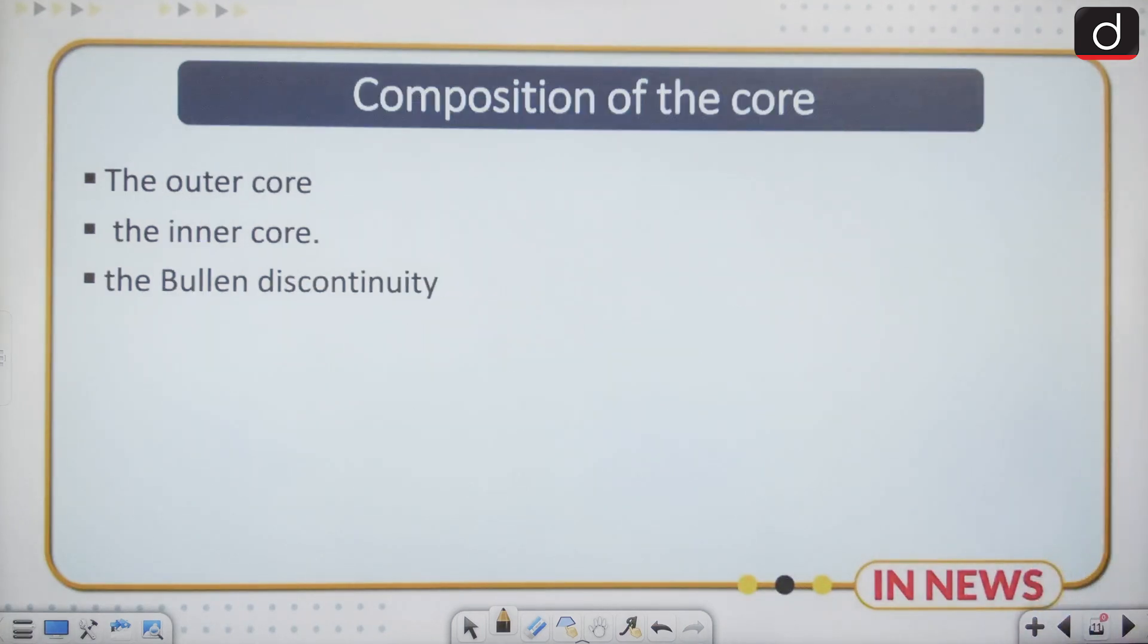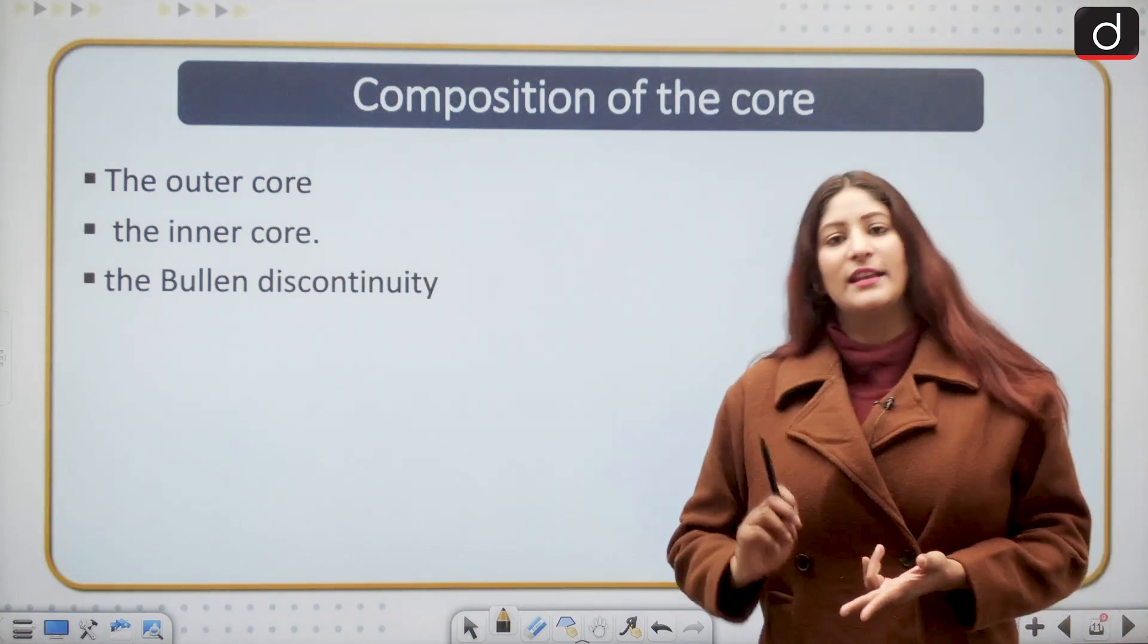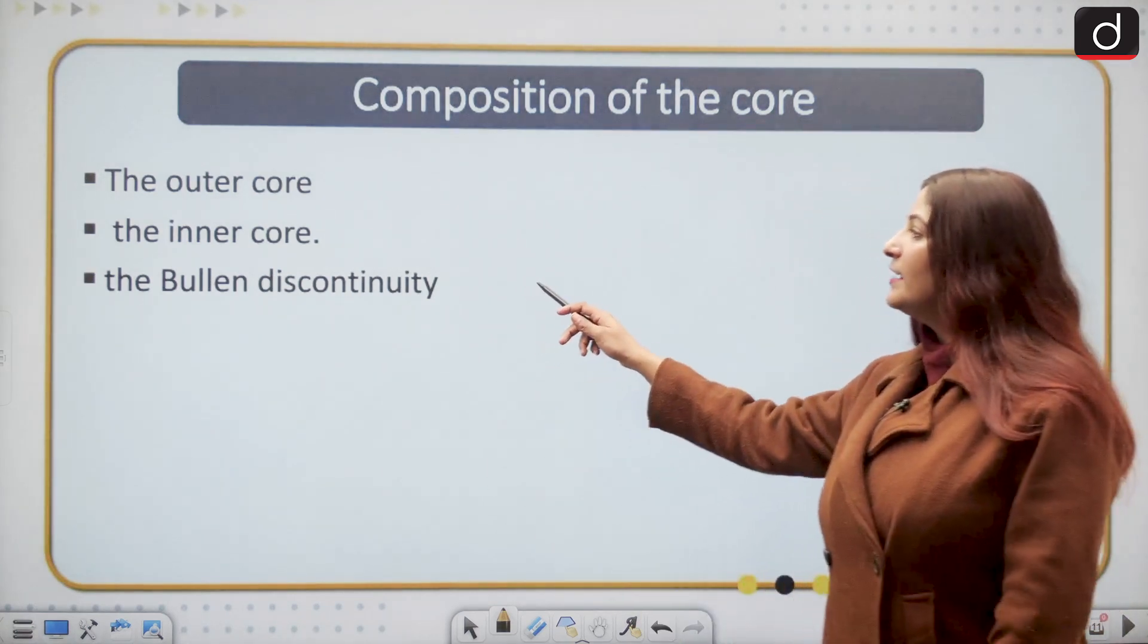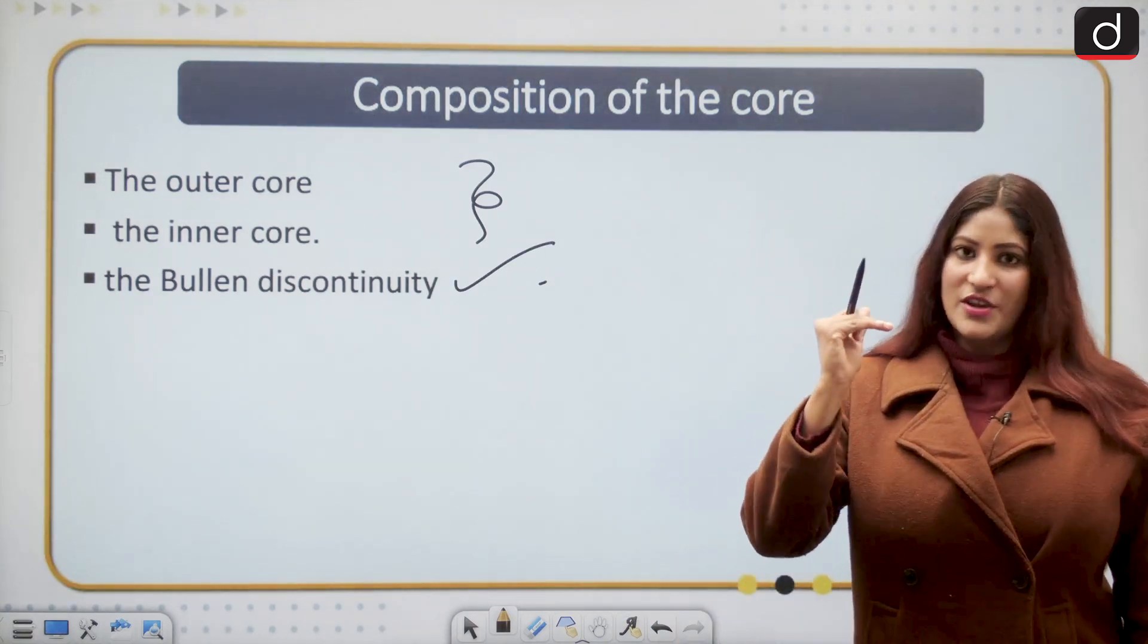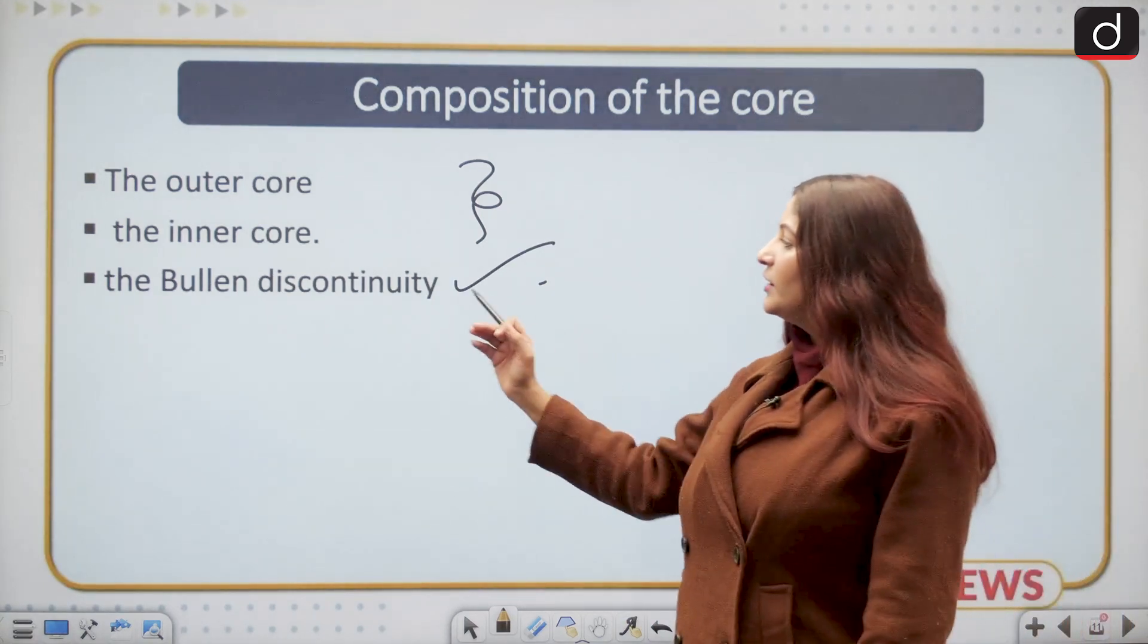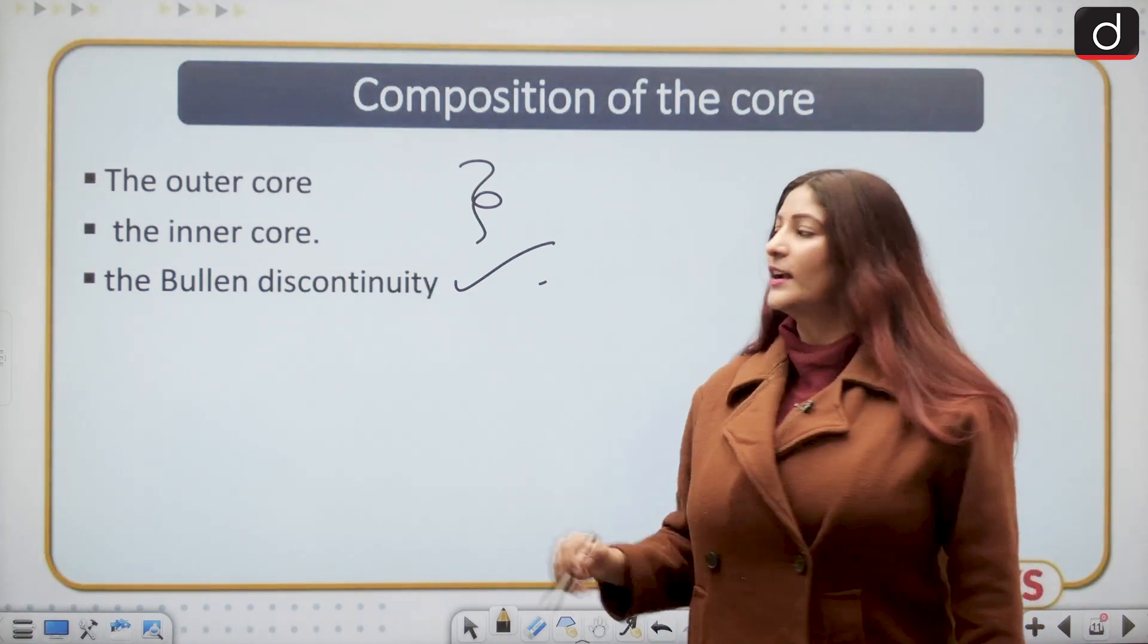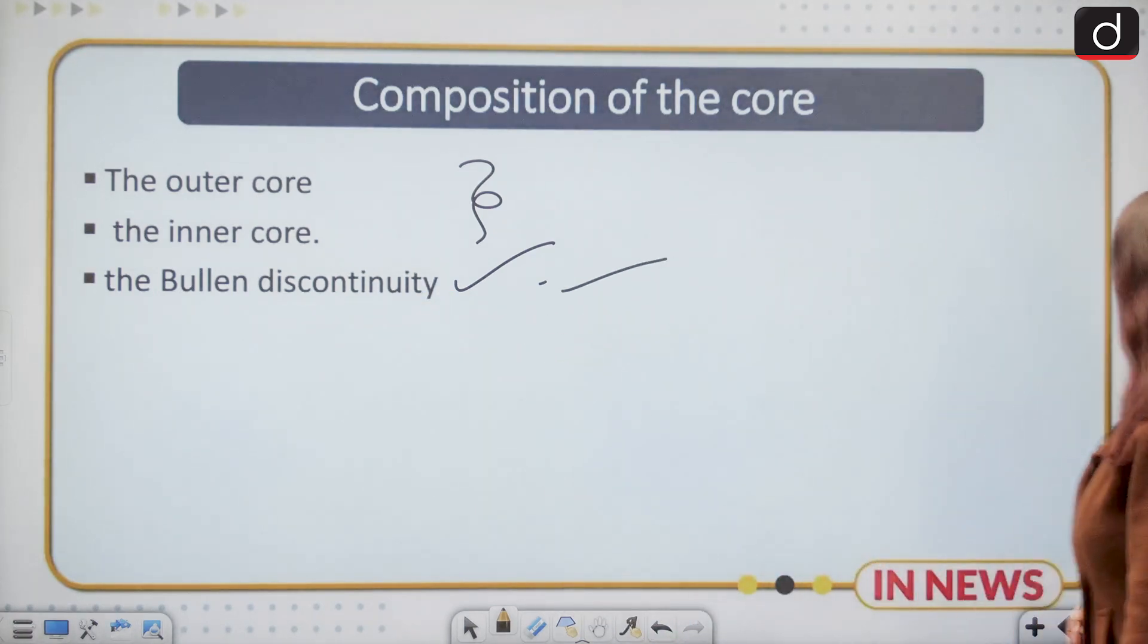This could be asked in your prelims examination. If we talk about the core as a whole, there is outer core and inner core. This is a fact for prelims: between the outer and the inner core the discontinuity is known as Bullen discontinuity. Very important preliminary fact, remember it.